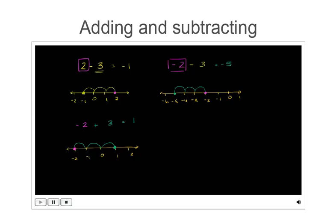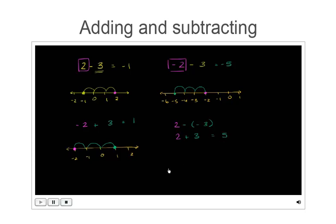Now let's think about positive 2 minus negative 3. When you subtract a negative, this is the same thing as adding the positive. So 2 minus negative 3 is the exact same thing as 2 plus positive 3. These two statements are equivalent, and this just comes down to 5.